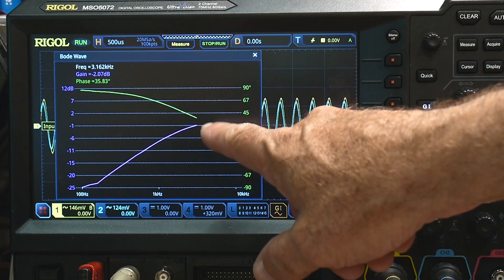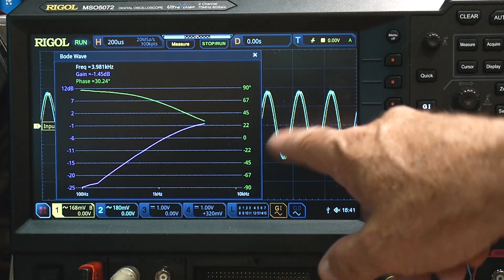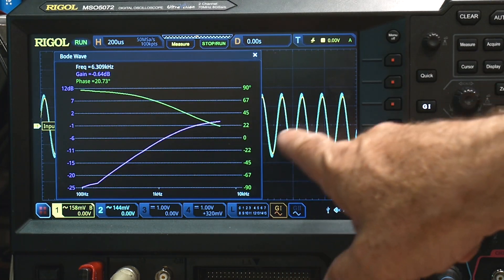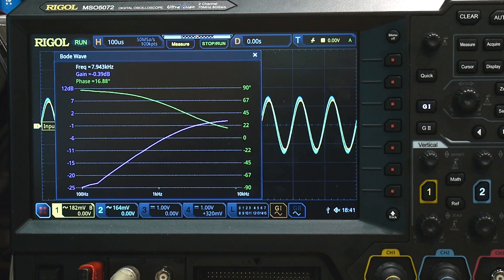Now, as we approach the band pass, the frequency where it's going to let through all frequencies, now we're in phase and we're the same amplitude.